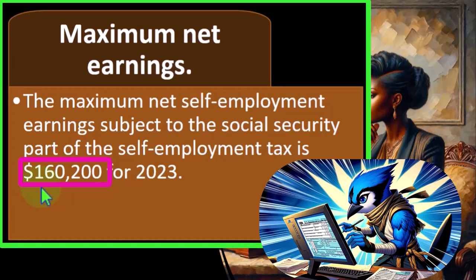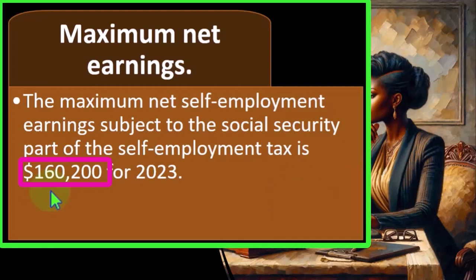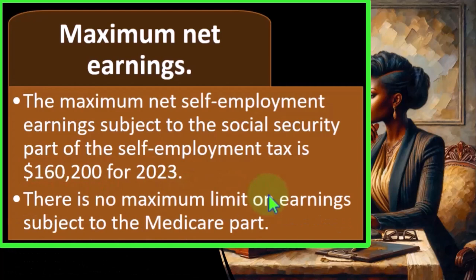When we calculate our self-employment for the Schedule C, if we have net income on the Schedule C over this amount, there could be a cap of $160,200. We'll talk more about that later, but some people argue about why there is a cap. Part of the reason is because the amount you put into Social Security will impact the benefits that you get out of it.